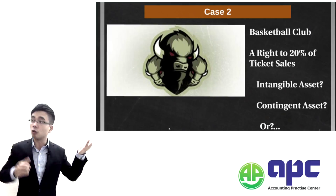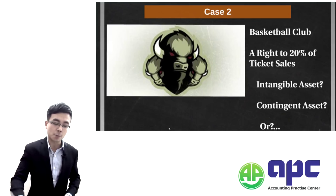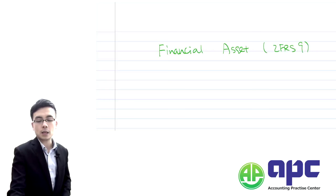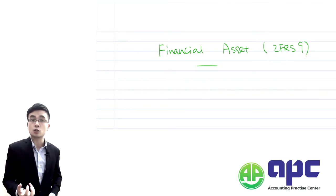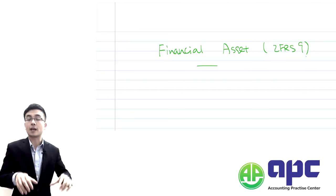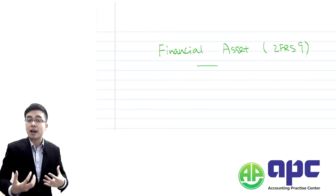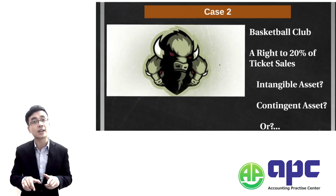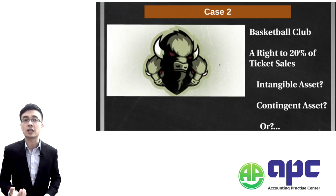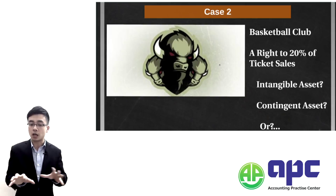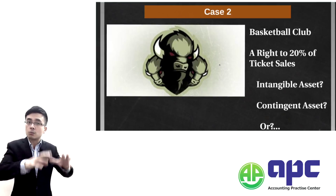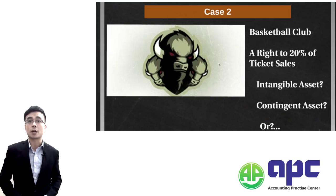So it's neither an intangible asset nor a contingent asset in this case. From my perspective, we should recognise it as a financial asset according to IFRS 9, because a financial asset means we've got the right to receive some benefit from another party. It may be more appropriate to disclose and recognise it as a financial asset rather than the intangible or contingent asset. You need to know the definitions of each of these elements within the accounting standards — no problem passing Paper 2 if you do.